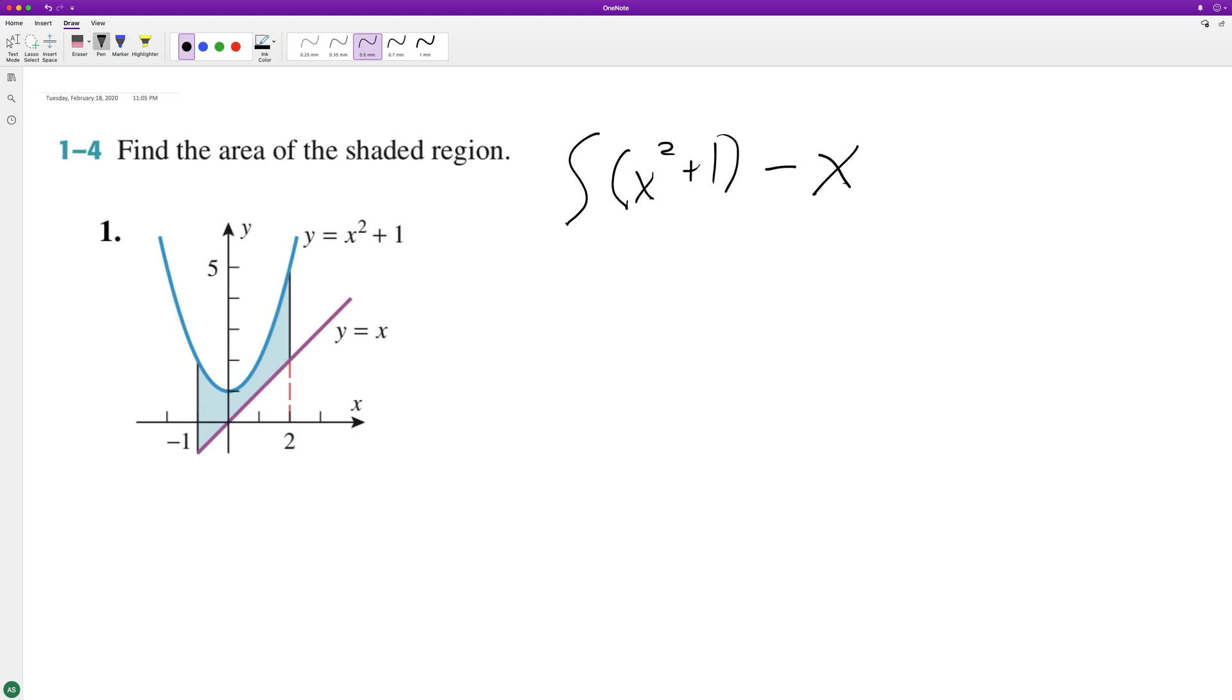So integrate this: x squared over two plus x minus the integral, which is x cubed over three minus x squared over two, from negative one to two.